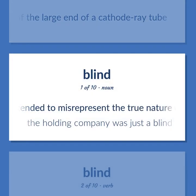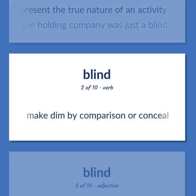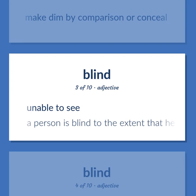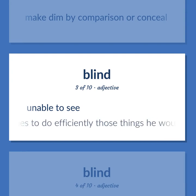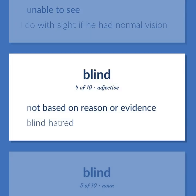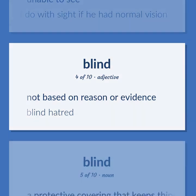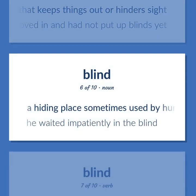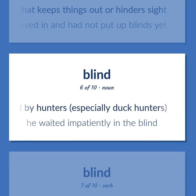Something intended to misrepresent the true nature of an activity. The holding company was just a blind. Make dim by comparison or conceal. Unable to see. A person is blind to the extent that he must devise alternative techniques to do efficiently those things he would do with sight if he had normal vision. Not based on reason or evidence. Blind hatred. A protective covering that keeps things out or hinders sight. They had just moved in and had not put up blinds yet. A hiding place sometimes used by hunters, especially duck hunters. He waited impatiently in the blind.